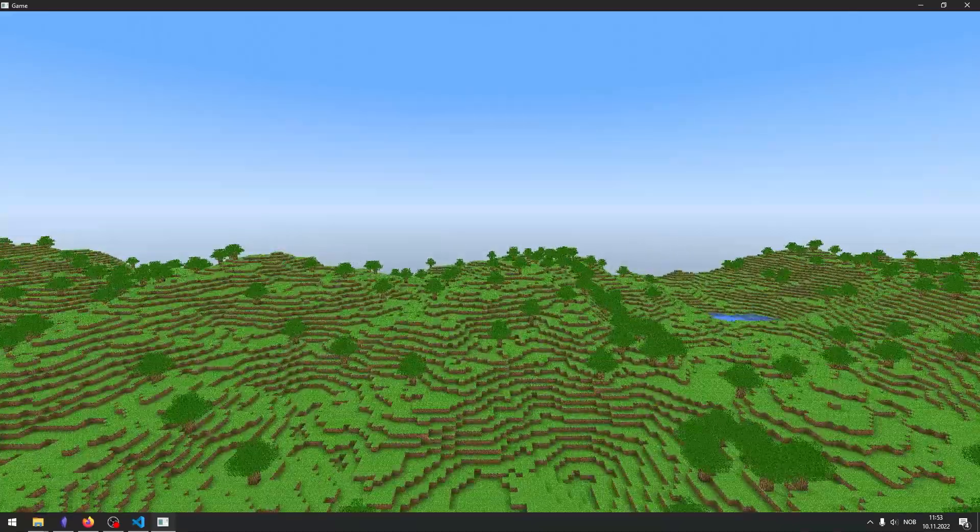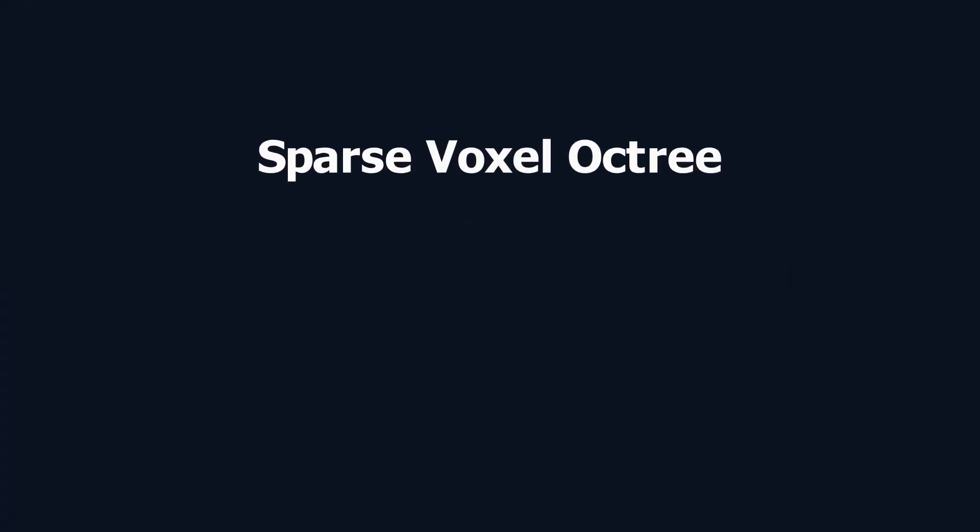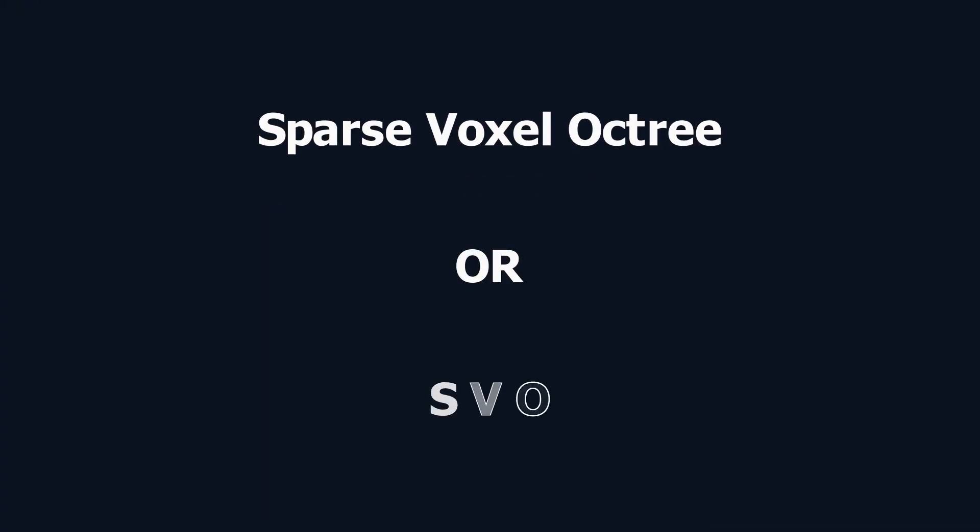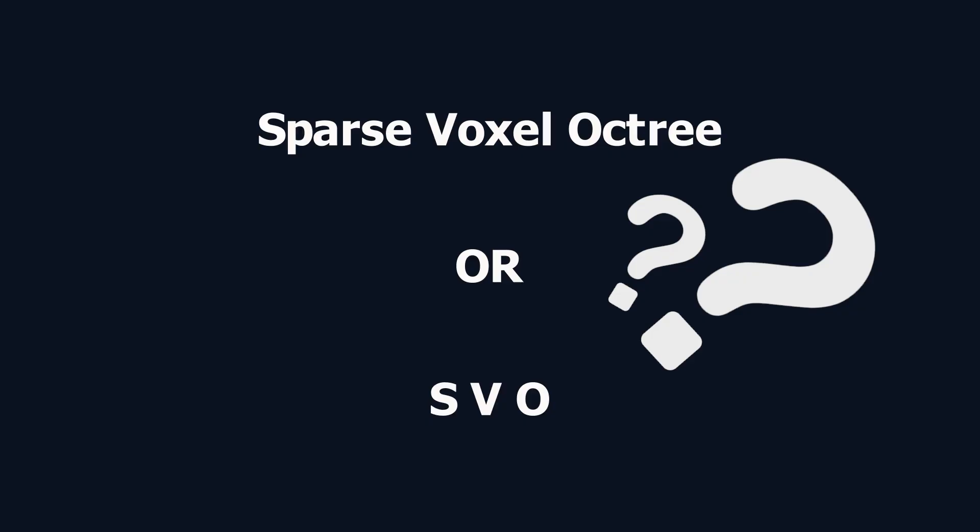If you've been around the voxel dev sphere, you might have heard 'sparse voxel octree,' or SVO for short, get thrown around. But what is it actually?